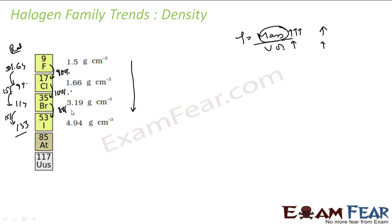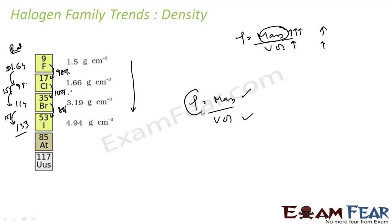Since mass increases at a higher rate (nearly 100%) and volume increases at a lower rate (50% then 15%), the overall density increases down the group. For example, density increases from 1.66 g/cm³ to 3.19 g/cm³. The first step from fluorine to chlorine shows a smaller density jump since volume increase was relatively larger there, but after that density increases more steeply.